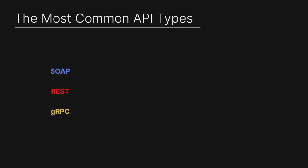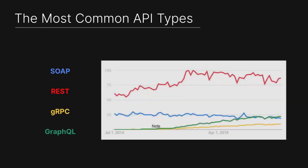Newer and up-and-coming API types include gRPC, which was developed by Google, and more recently GraphQL, which was built by Facebook. GraphQL is used by some very prominent APIs on the web — for example, if you've ever interacted with GitHub's new API, that's GraphQL-based.